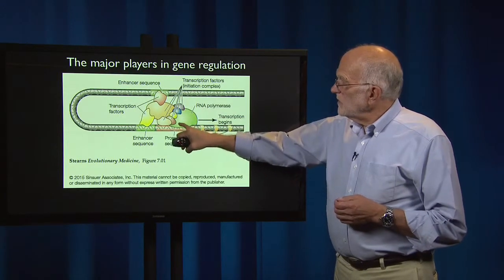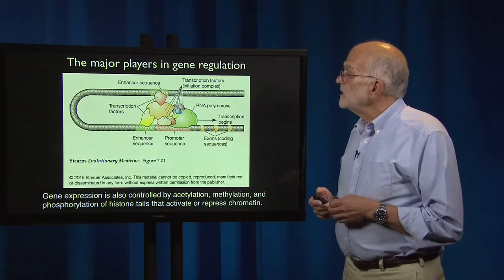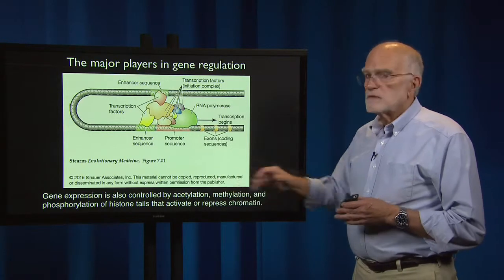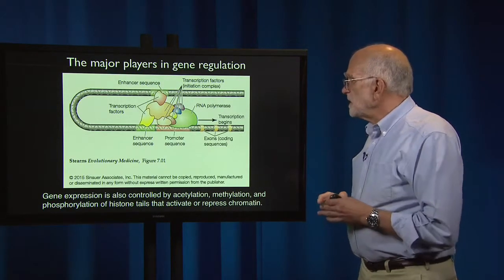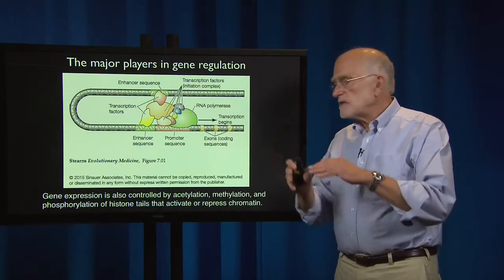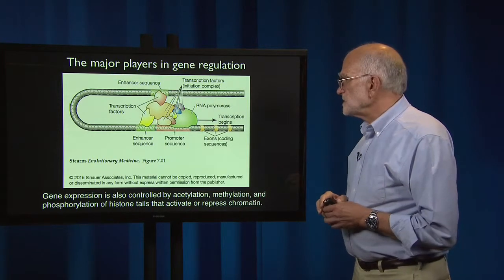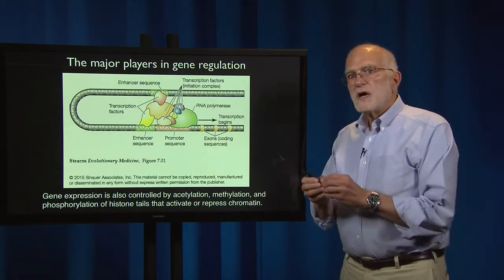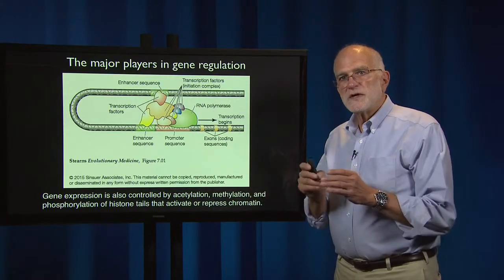Once the gene is turned on, RNA polymerase starts walking down the DNA double helix making messenger RNA. Gene expression is also controlled by acetylation, which will unwind the DNA from the histones around which it is wrapped, or bind it to those histones. Acetylation can uncover large stretches of DNA, and methylation is more specific — it can bind just to one gene and prevent it from being expressed. Phosphorylation of histone tails will also activate or repress chromatin. So on a spatial scale, genes can be silenced or expressed over large stretches, intermediate stretches, or just as single genes.